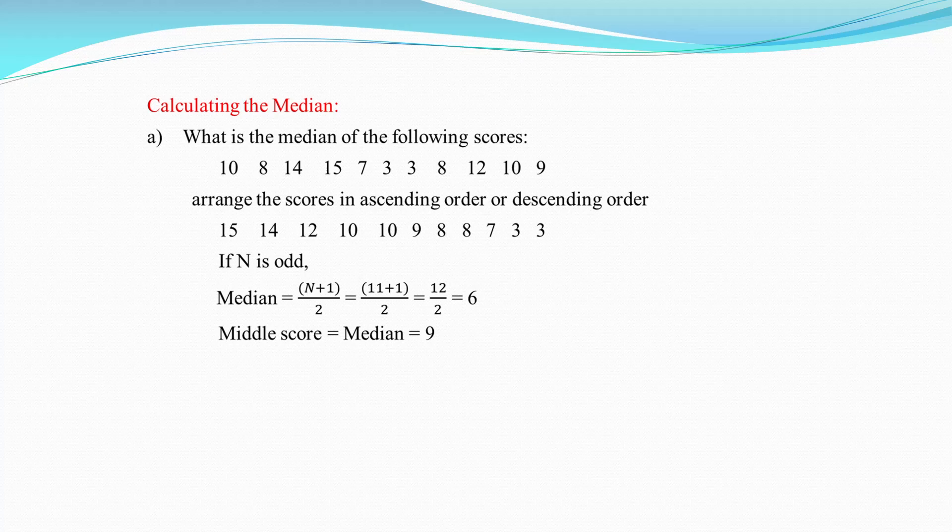What is the median of the following scores: 10, 8, 14, 15, 7, 3, 3, 8, 12, 10, 9? First, arrange the scores in ascending or descending order. Since n is odd, use the formula (n + 1) / 2. With n = 11: (11 + 1) / 2 = 12 / 2 = 6. So the median is the 6th value, which is 9.